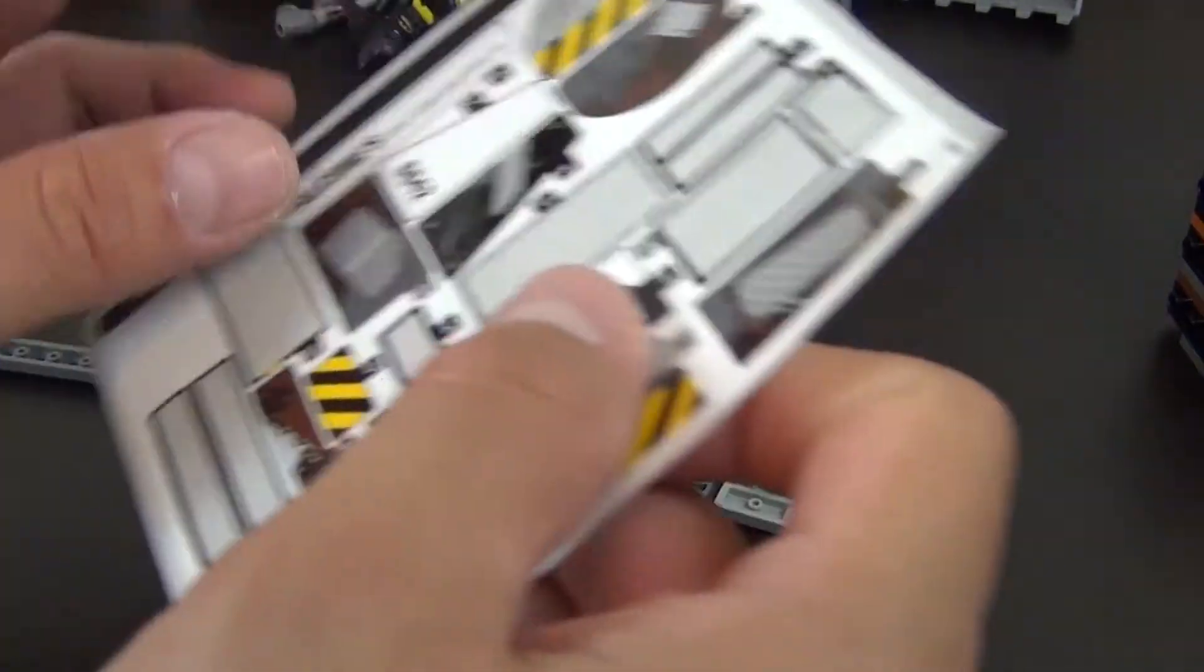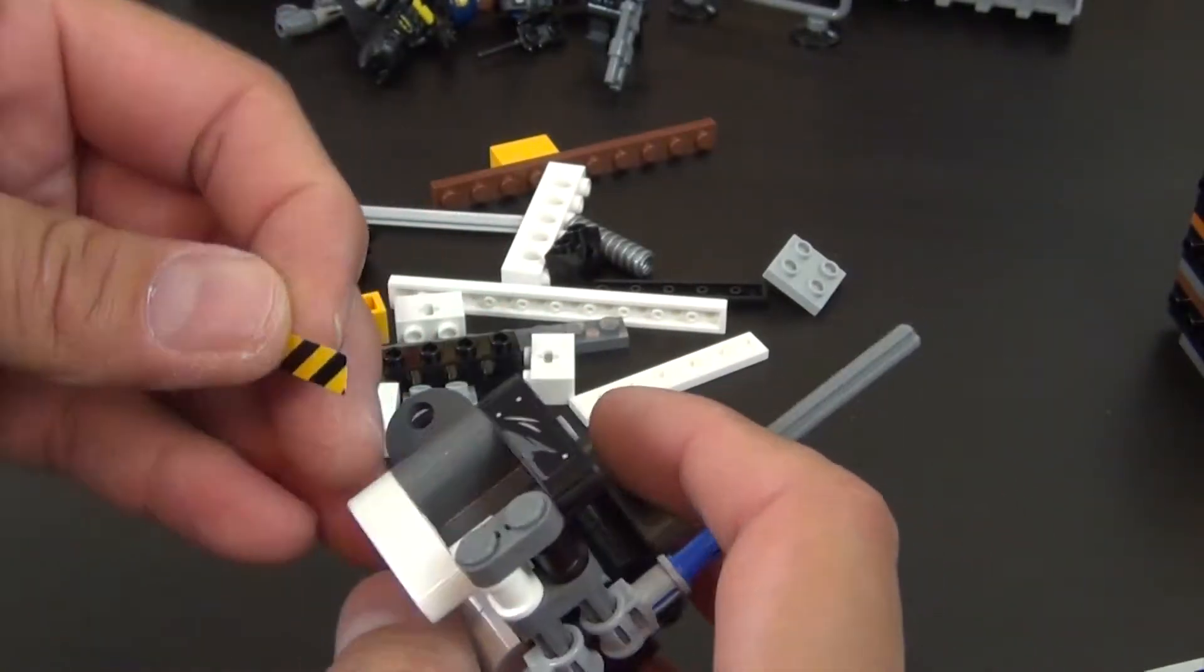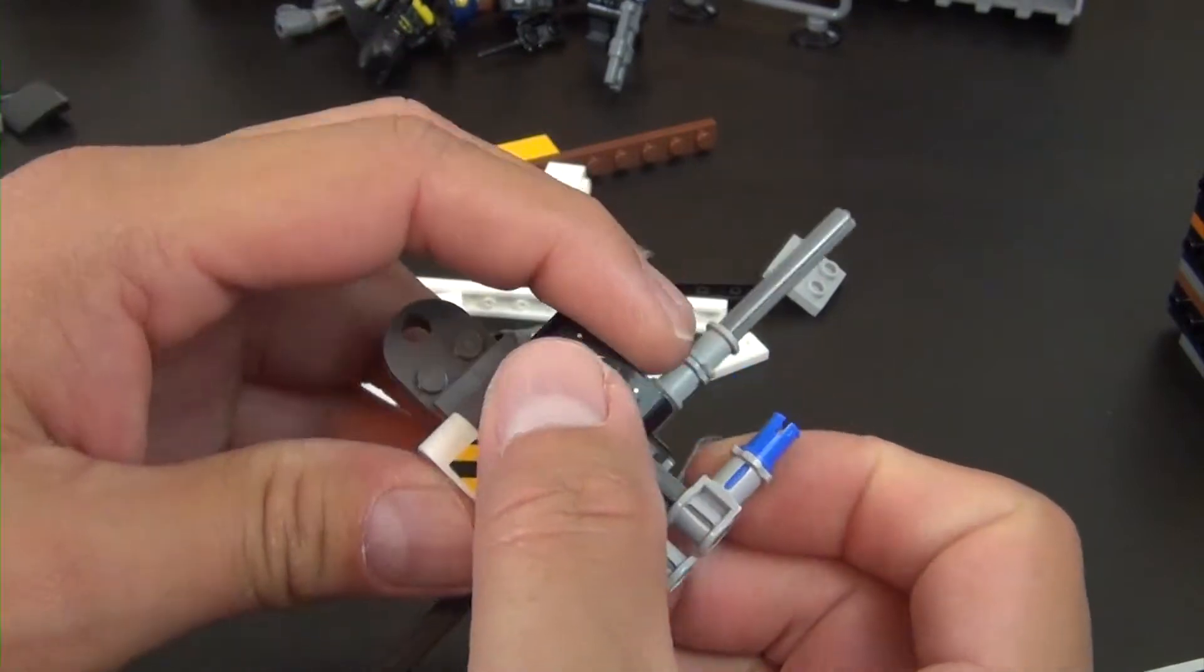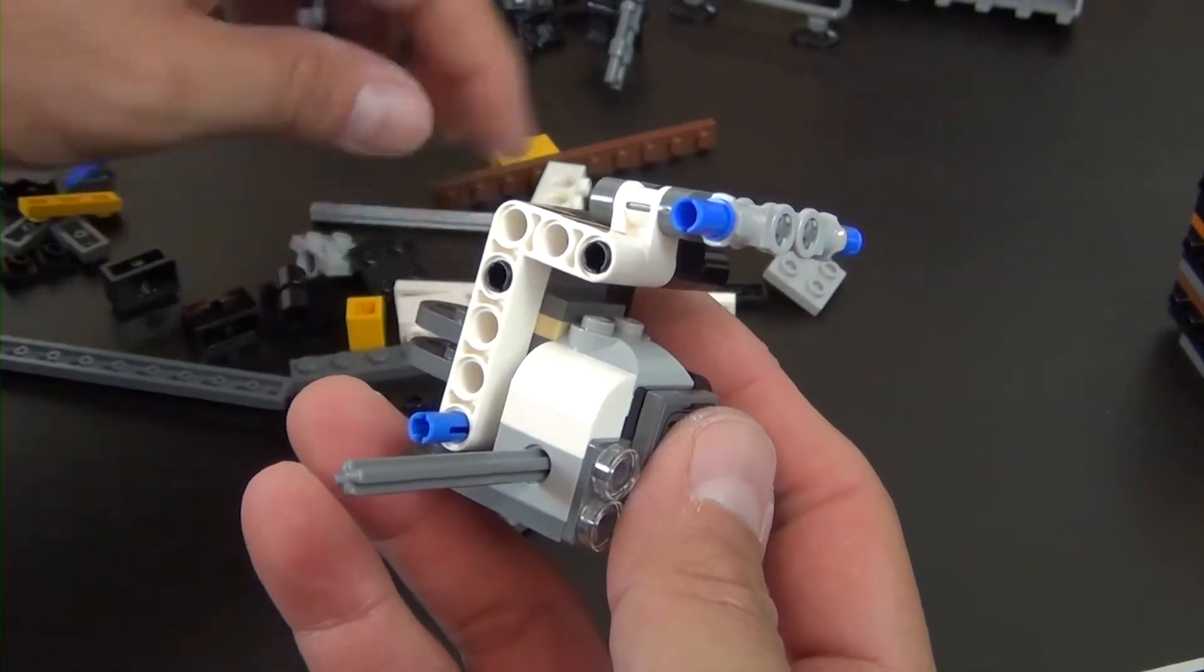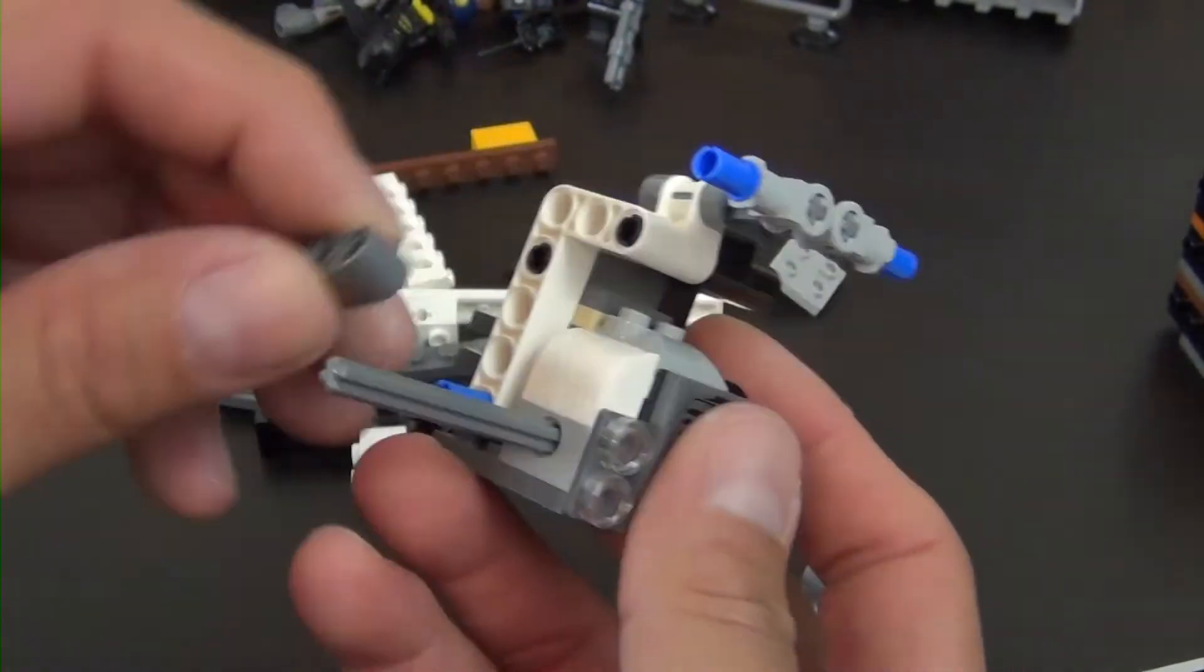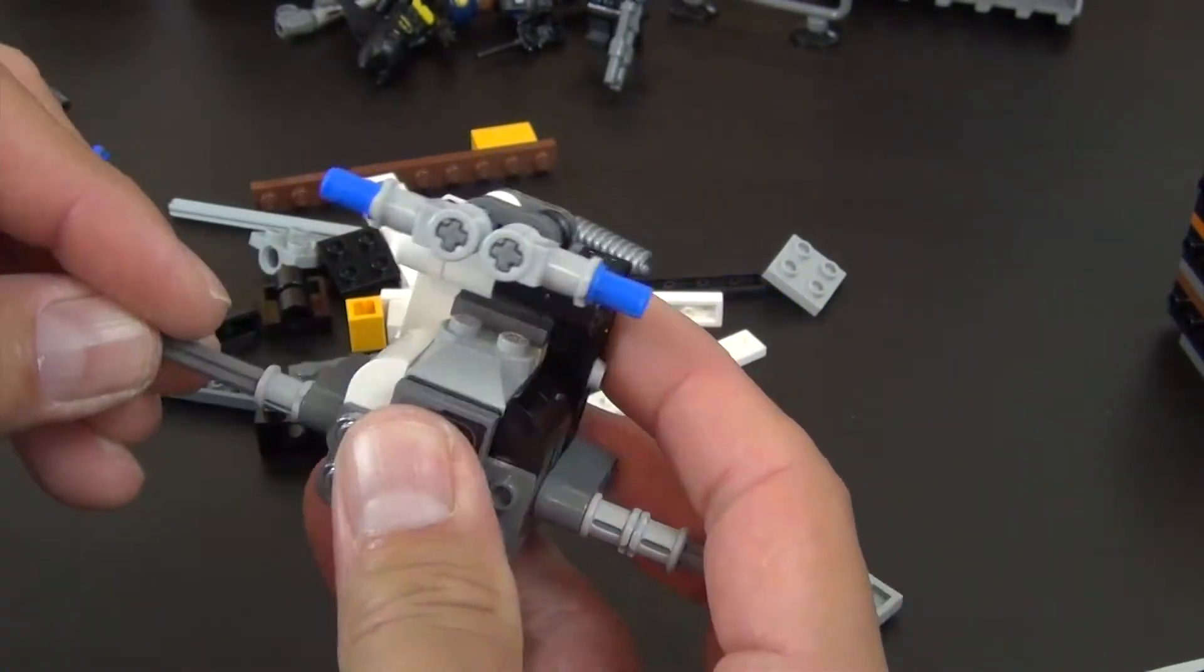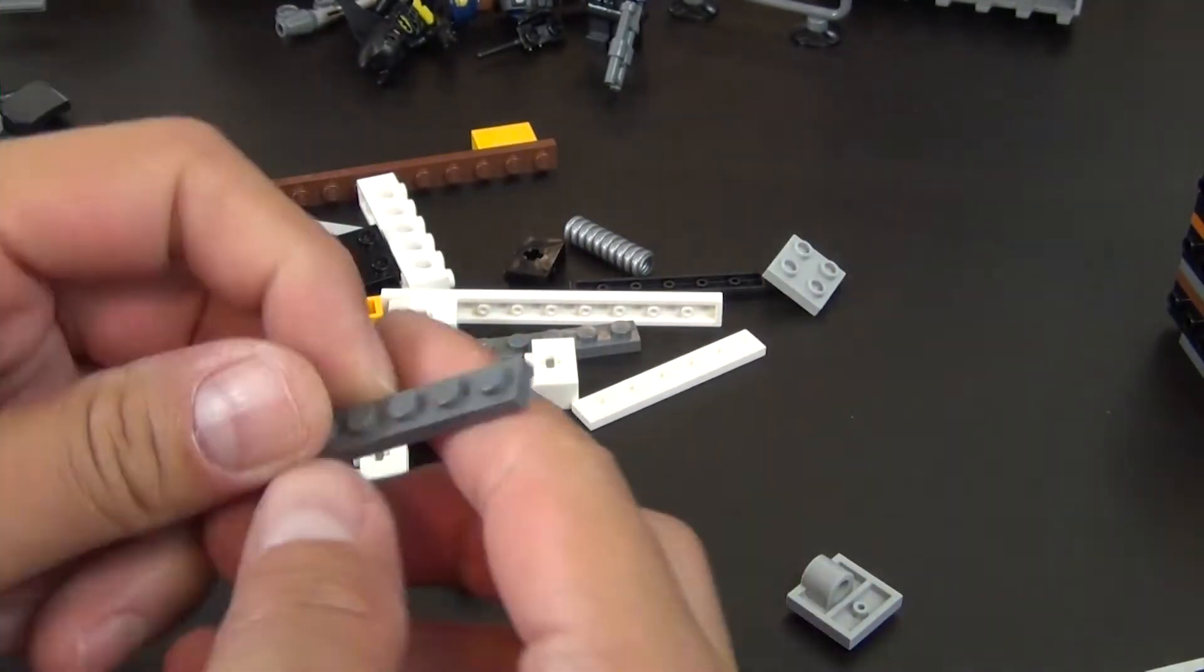With our next sticker, sticker number 17. There we go. Now we'll finish this side off if I can find the piece we're looking for - there it is. So this is just like the other side - we put that three long lift arm on and then two bushings. All right, move that to the side for now.